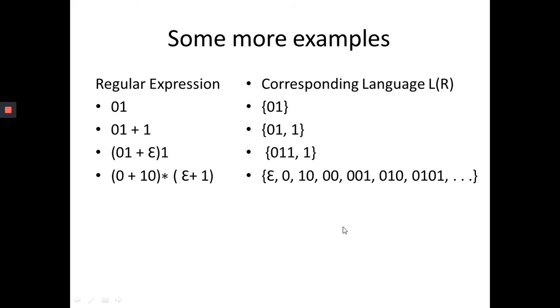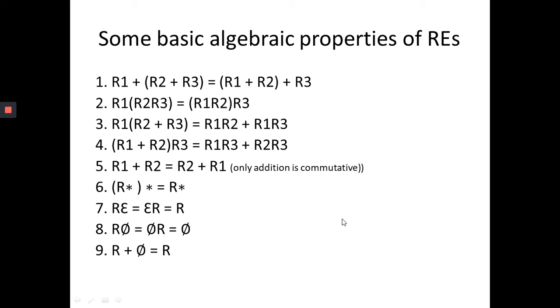I want to continue with some basic algebraic properties of regular expressions. If I want to write regular expression 1 union with regular expression 2 union with regular expression 3, I can write it as R1 plus (R2 plus R3), then R1(R2R3), then I can write (R1R2)R3, so the sequence is the same. Then, R1(R2 plus R3), so it is R1R2 union with R1R3.